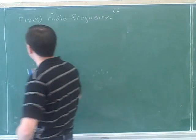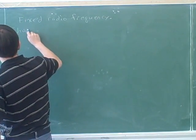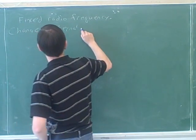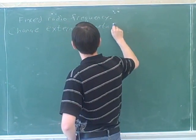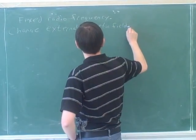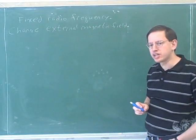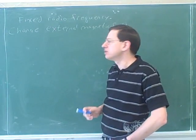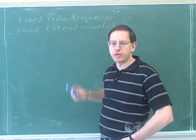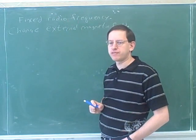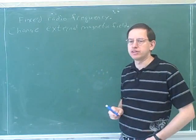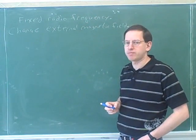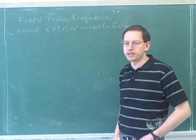After we fix the radio frequency, we change an external magnetic field. And it turns out that when the magnetic field is at the right level, that will allow the nuclei to absorb the radio frequency. So the radio frequency can only be absorbed when the magnetic field is at the correct level. When we have the correct magnetic field, then the nucleus can absorb the radio frequency.